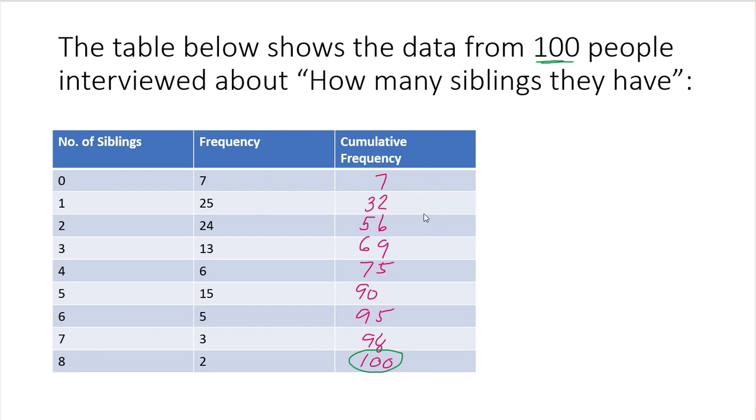What does this mean? So this simply means that there are 32 people. 32 people have siblings that are 0 to 1. So 32 people, they have 0 to 1 siblings. Or if you go to 75 right here, therefore you would say 75 people have siblings, have 0 to 4 siblings.